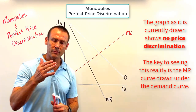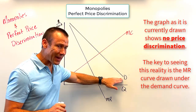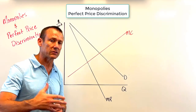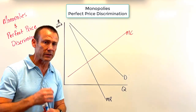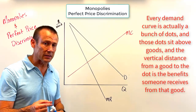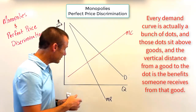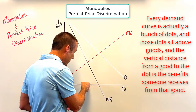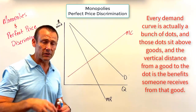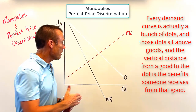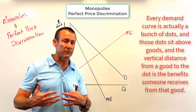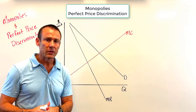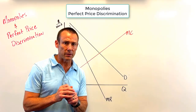Why does MR break away from demand when there's no price discrimination? The demand curve is the marginal benefit curve to the consumer. Here at Econ Busters we like to say every demand curve is actually a bunch of dots sitting above goods, and the vertical distance from a good to that dot is the benefit somebody places on that good.